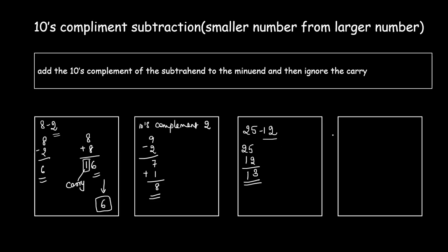We need to find the tens complement of the subtrahend 12. Since it is a two-digit number, first find the nines complement: 9 minus 2 is 7, and 9 minus 1 is 8, giving nines complement 87. Then add 1 to get the tens complement of 12, which is 88.